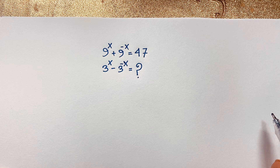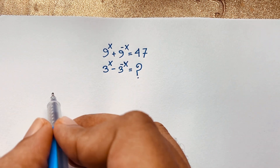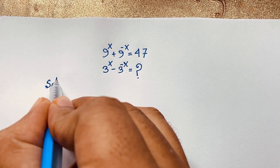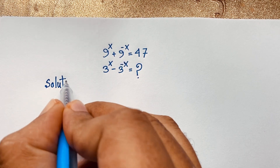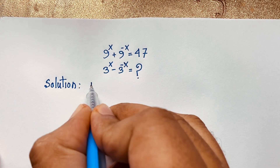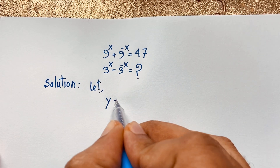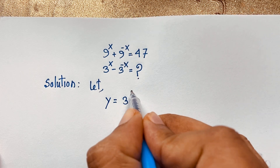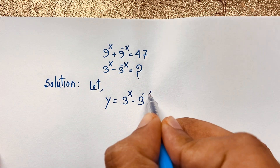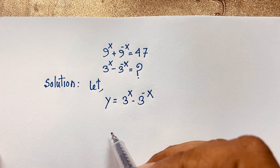How to solve this interesting maths problem? I solved this question using an easy method. First of all, we let y be equal to 3 to the power x minus 3 to the power minus x. We set this expression equal to y.